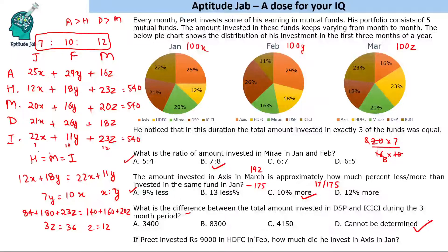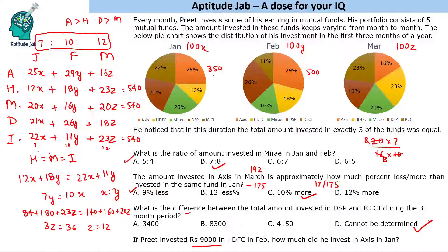If Preet invested ₹9000 in HDFC in February, how much did he invest in Axis in January? HDFC in February = 18y = 9000, so y = 500. Since x : y = 7 : 10 and y = 500, we get x = 350. Axis in January = 25 × 350 = 8750. So the answer is ₹8750.